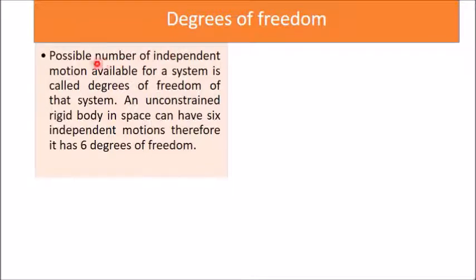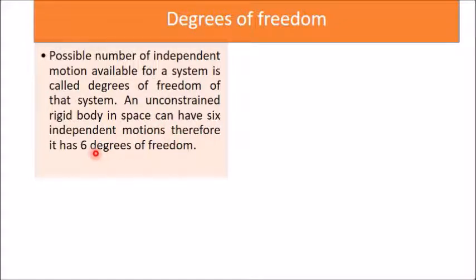The possible number of independent motions available for a system is called degrees of freedom of that system. An unconstrained rigid body in space can have six independent motions and therefore it has six degrees of freedom. Unconstrained means no restriction is given — that type of rigid body is called an unconstrained rigid body.